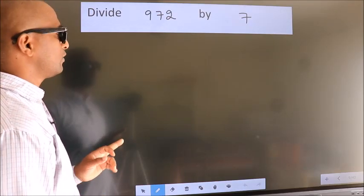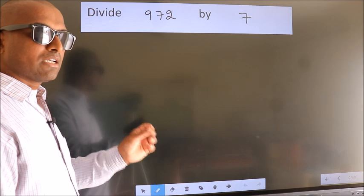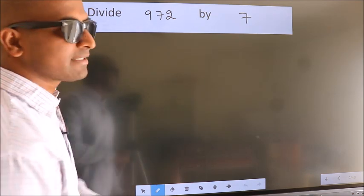Divide 972 by 7. To do this division we should frame it in this way.